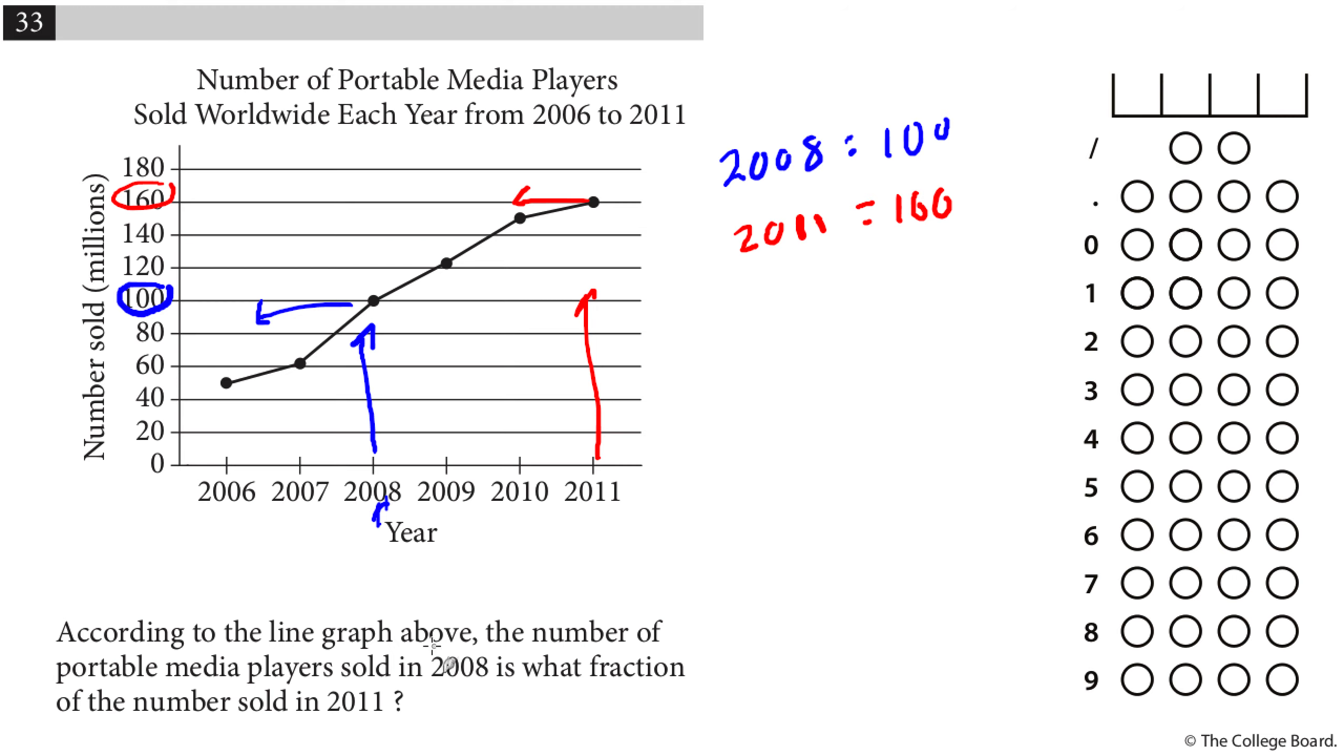And it says, what fraction is 2008 of the ones in 2011. So that means I do 100 over 160. Now I have a couple of options here. The option I like the best is to reduce the fraction and say, okay, 100 over 160. I can divide 10 out of the top and the bottom and get 10 out of 16. And now it's still not reduced completely because they both have a factor of two. So I can divide top and bottom by two. And I would get 5 out of 8. And I could put my answer in as 5 out of 8. So 5 over 8 or 5 eighths is the fraction. That's one answer. That's the answer I like.